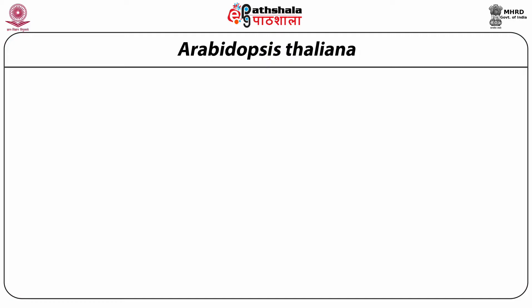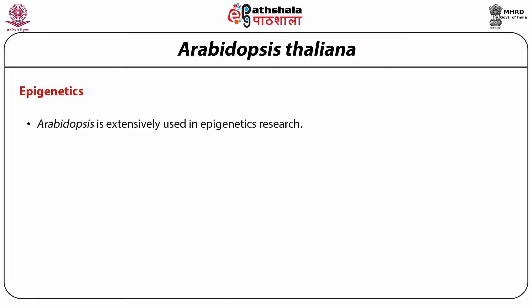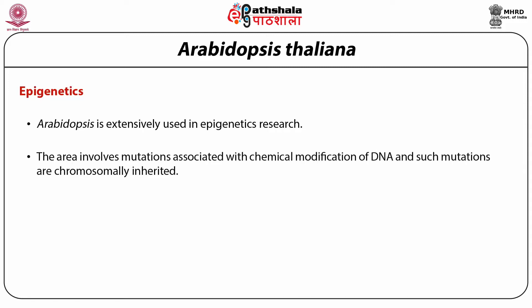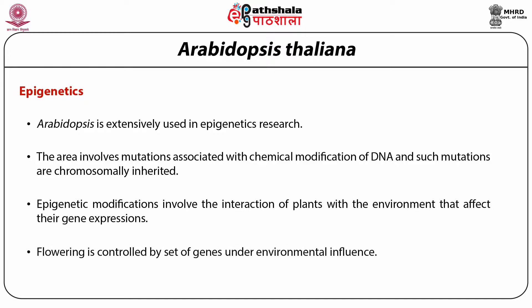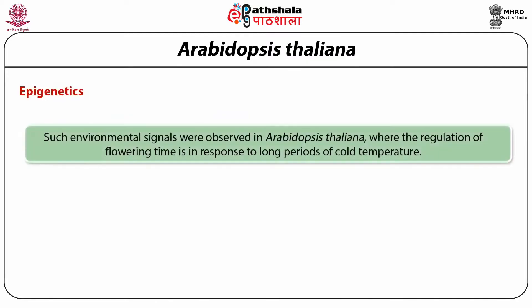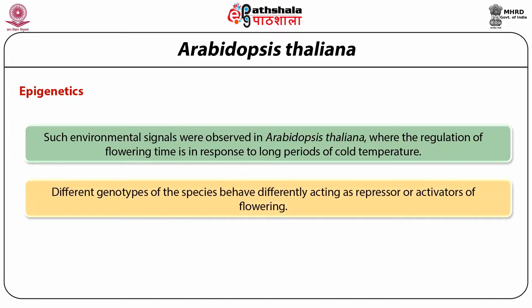Arabidopsis is extensively used in epigenetics research. This area involves mutations associated with chemical modifications of DNA, which are chromosomally inherited. Epigenetic modifications involve the interaction of plants with the environment that affects gene expression. Flowering is controlled by a set of genes under environmental influence; such environmental signals were observed in Arabidopsis thaliana where the regulation of flowering time is in response to long periods of cold temperature. Different genotypes of the species behave differently, acting as repressors or activators of flowering.